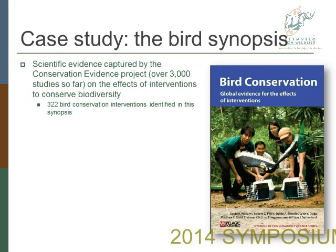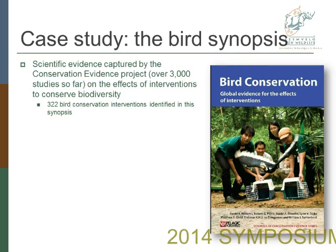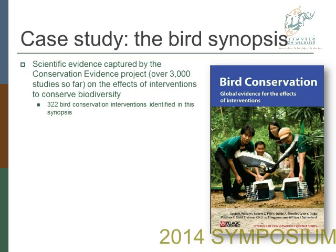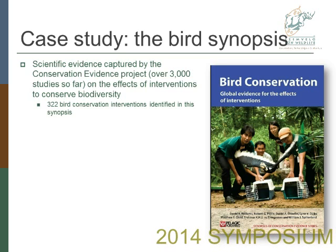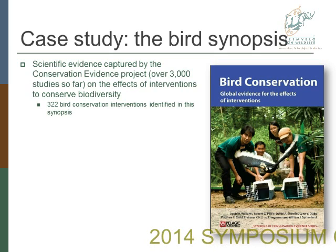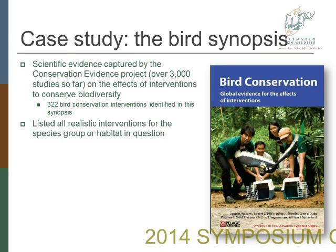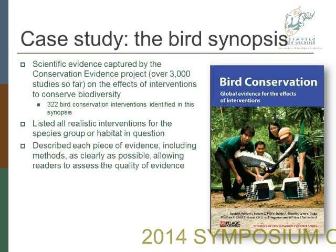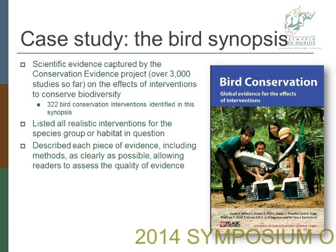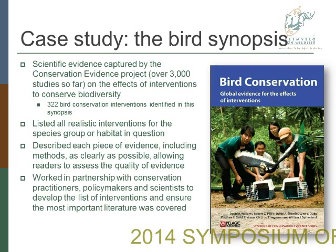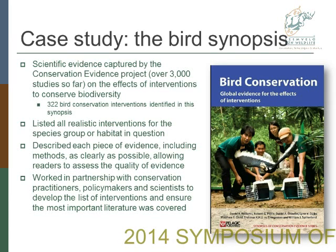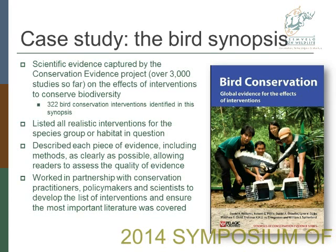Just to touch quickly on a small case study on the bird synopsis. Essentially, this captured scientific evidence from over 3,000 studies on the effects of interventions to conserve biodiversity. There were 322 bird conservation interventions identified from all of these studies. All the realistic interventions were listed for different species groups or habitats in question, and each piece of evidence was described — including the methods — as clearly as possible, allowing readers to assess the quality of the evidence. This was done working closely in partnership with conservation practitioners, policy makers, and scientists.